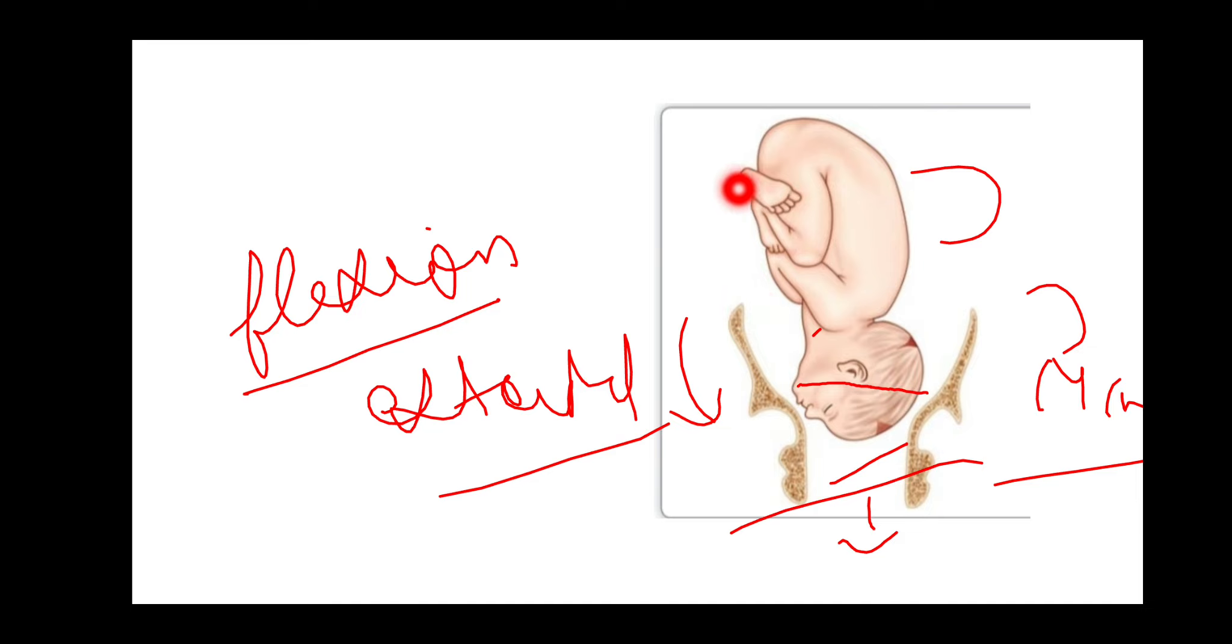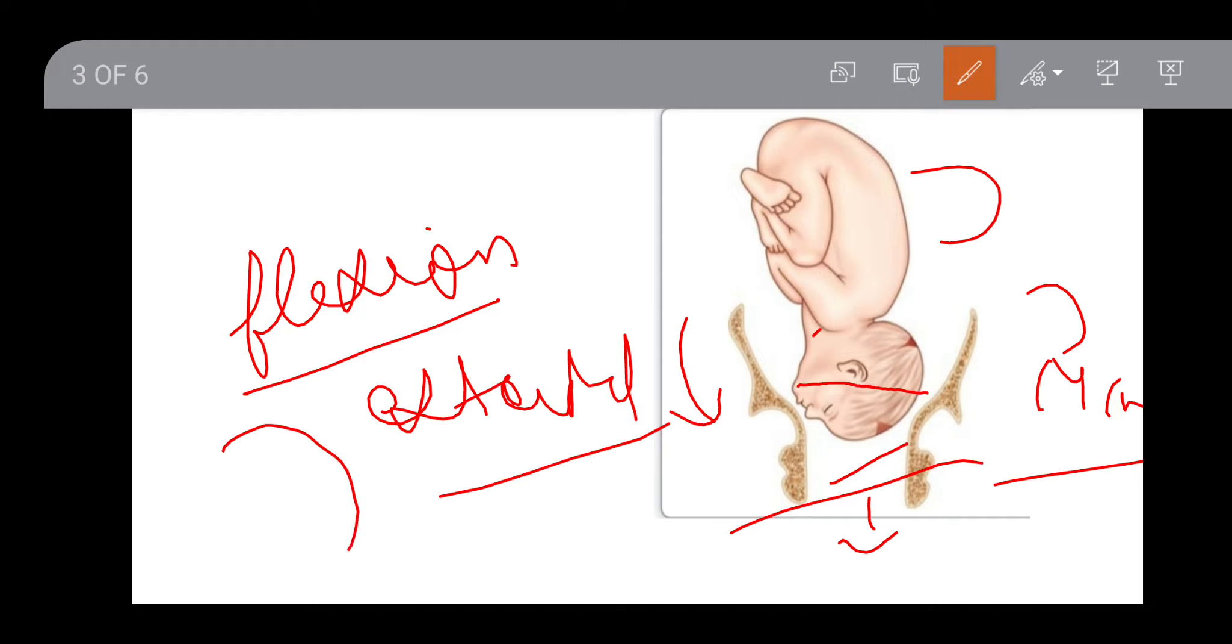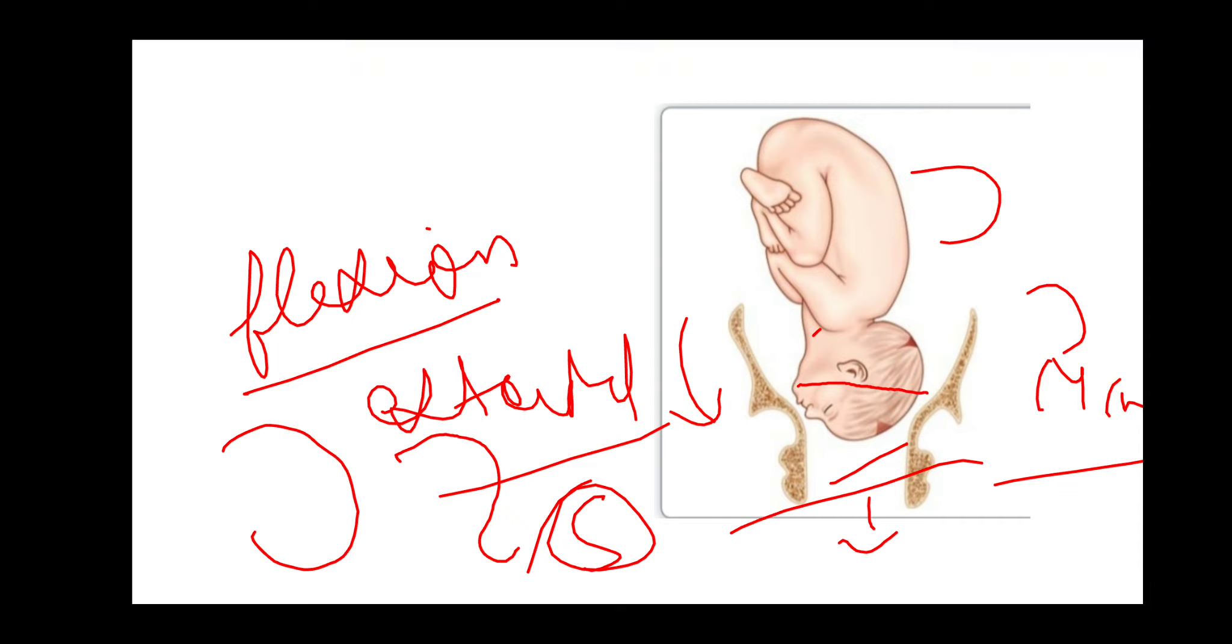In the lateral grip, on one side you will have a curve-like structure and on the other side you will have a notch feel. If you compare to normal flexion where you would feel a smooth curve, because of the head extension here you will have a different feel. When you check the pelvic grip, you will find the head is not engaged because the diameter is large and not engaged.